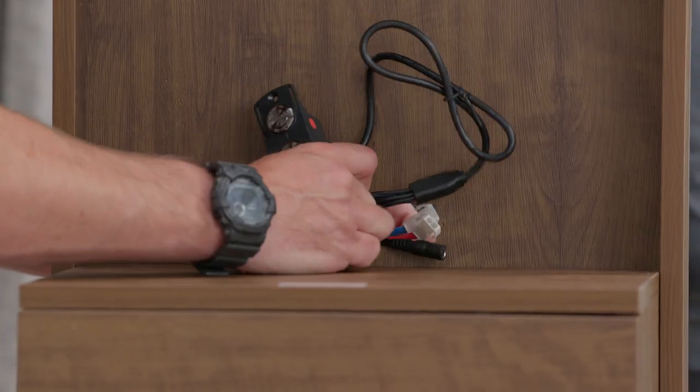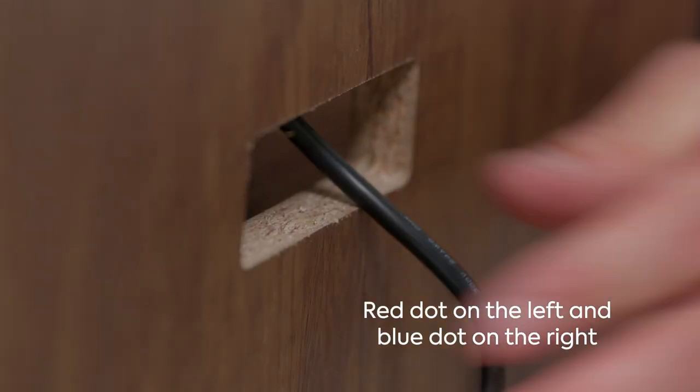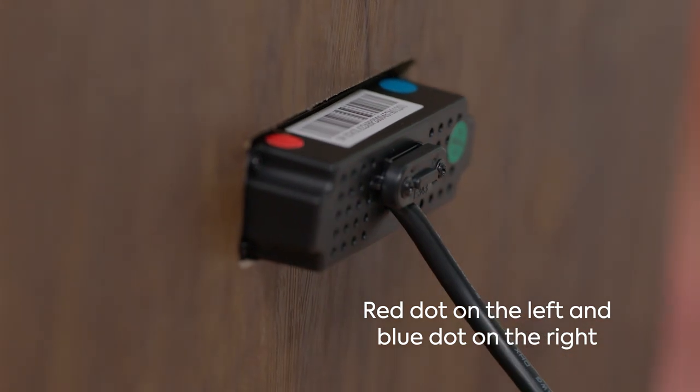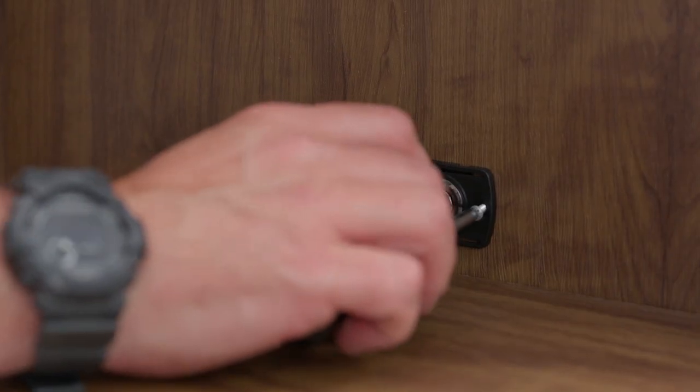Ensure the colour dots are in the right position when fitting the USB switch. On the switch, the red dot should be on the left-hand side for the left wing and the right-hand side for the right wing.